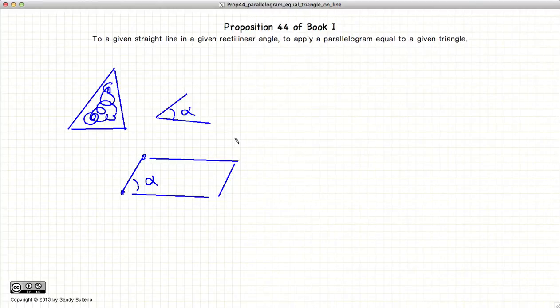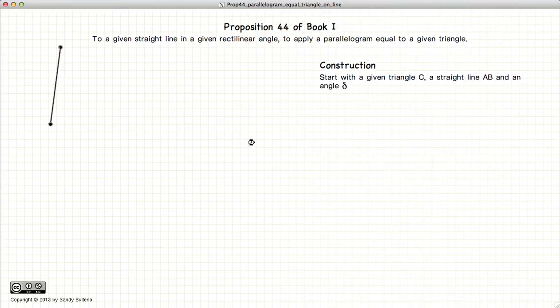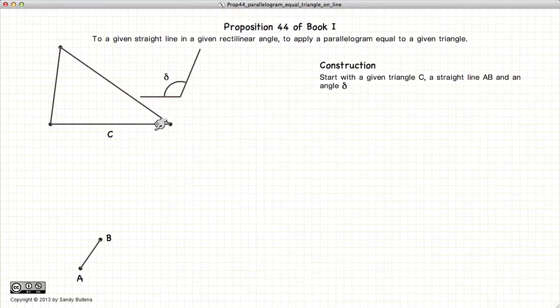So this is a rather long construction so it's going to take a bit of patience but we'll get through it. Let's begin. First we're going to start with our triangle, our given angle, which I'll call delta, and our given line segment, which I call AB.